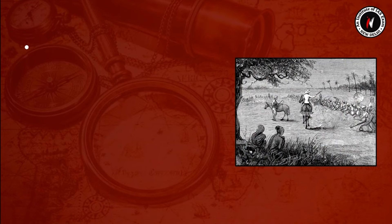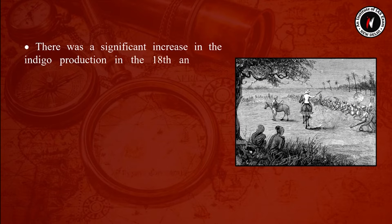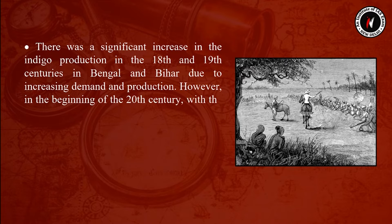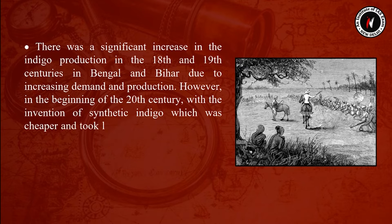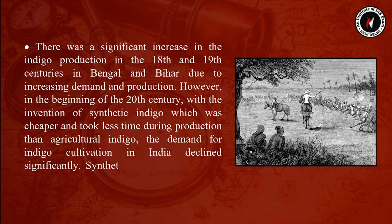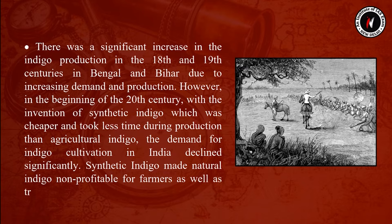There was a significant increase in indigo production in the 18th and 19th centuries in Bengal and Bihar due to increasing demand. However, in the beginning of the 20th century, with the invention of synthetic indigo — which was cheaper and took less time to produce than agricultural indigo — the demand for natural indigo cultivation declined significantly, making it non-profitable for farmers and traders.